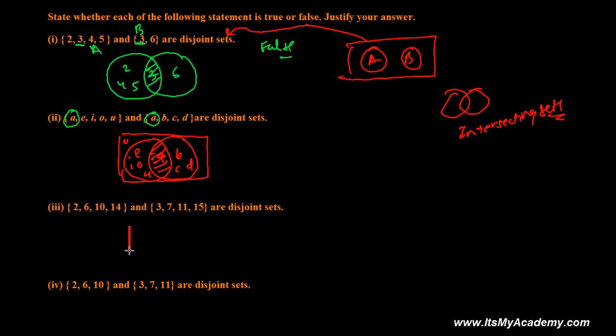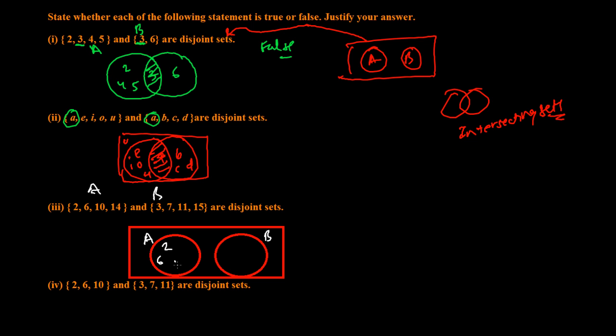If you make the Venn diagram of this, it will be completely two things. This will be set A and this will be set B. Here is 2, 6, 10, and 14, and here 3, 7, 11, and 15. Nothing is common. These are even numbers, these are odd numbers. So this is yes.